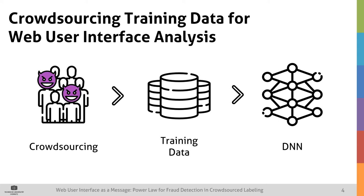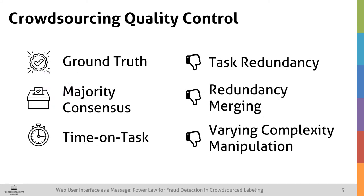However, the problem with crowdsourcing is quality, because you have a significant share of either low quality crowd workers or even malicious crowd workers. Common techniques for crowdsourcing quality control are ground truth and majority consensus. However, these perform not very well for UI labeling tasks due to their high level of redundancy. For majority consensus, there is also the problem of merging contributions from different crowd workers and resolving conflicts, which is not trivial, specifically for image labeling tasks.